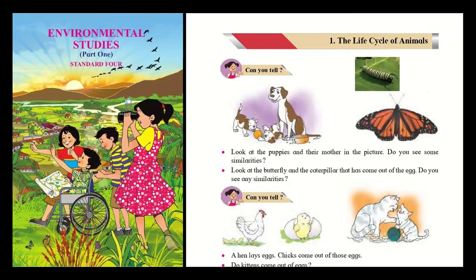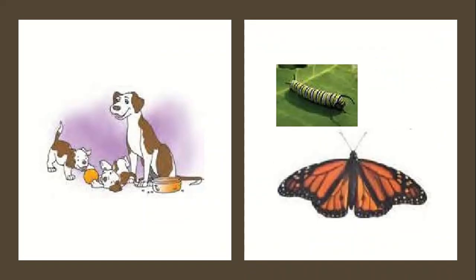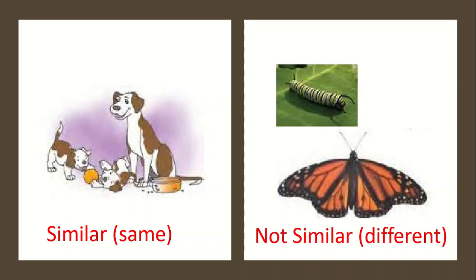Now, look at the puppies and their mother in the picture. What do you see there? The puppies and the mother, they are similar. Yes or no? They look very same. They are similar to each other. And now you can see a picture of a caterpillar and a butterfly, and the caterpillar that has come out of the egg. Do you see some similarities there? No.